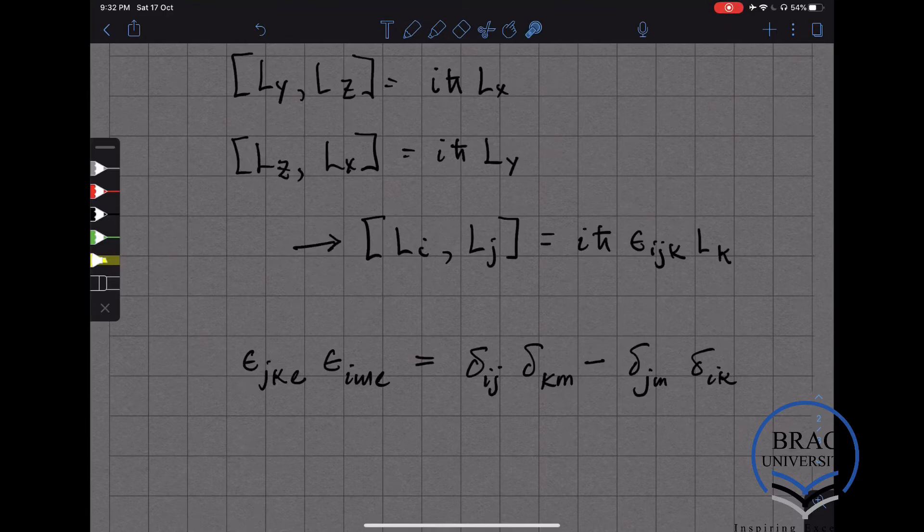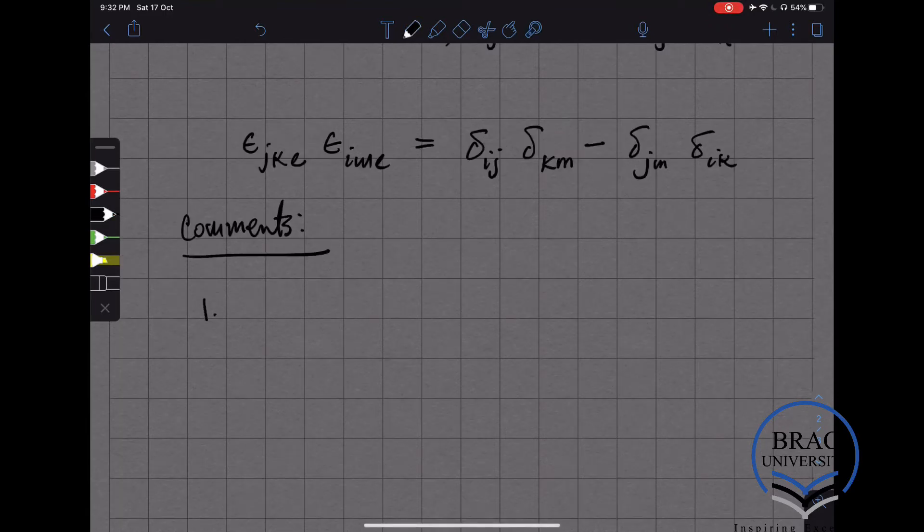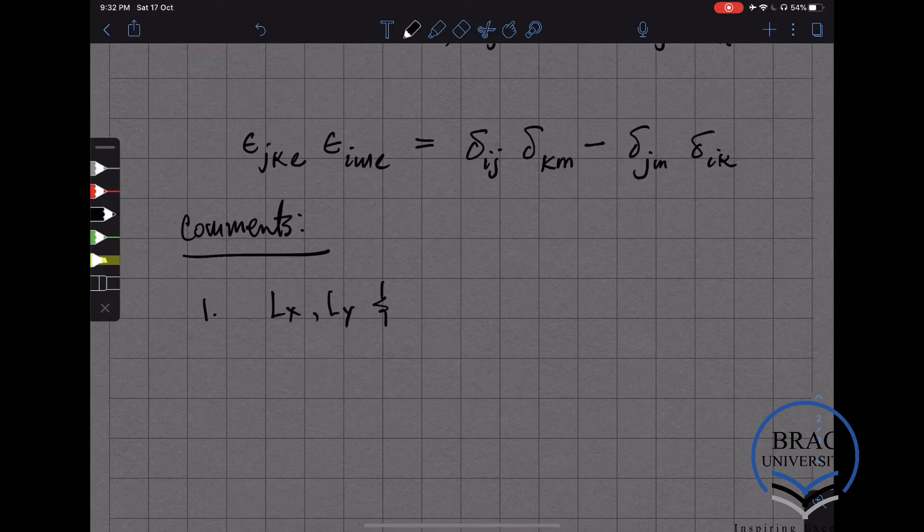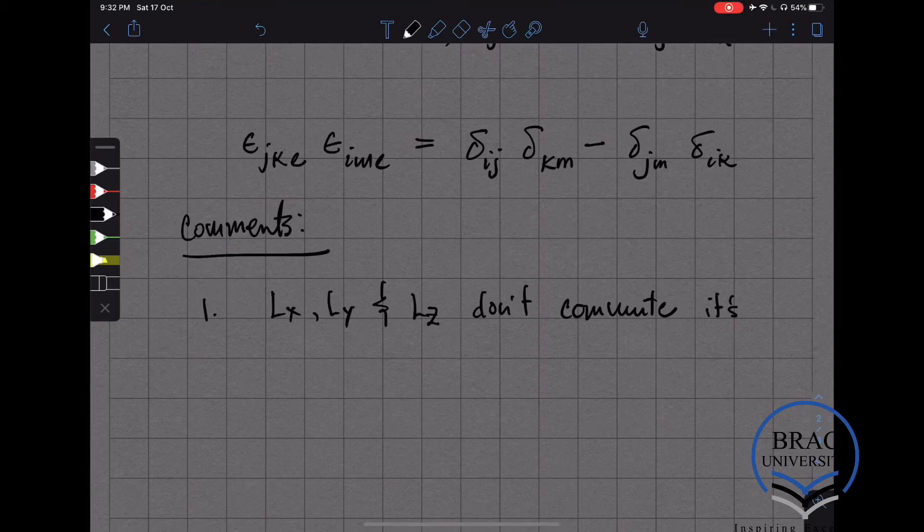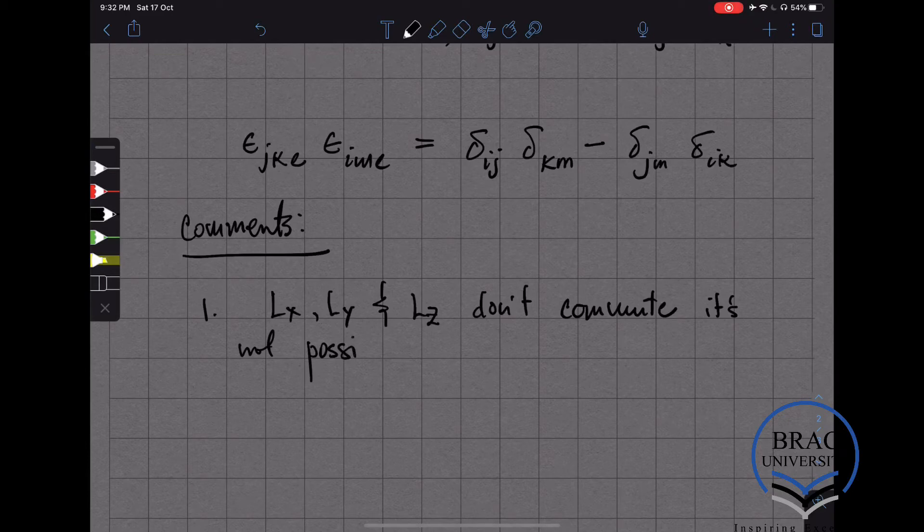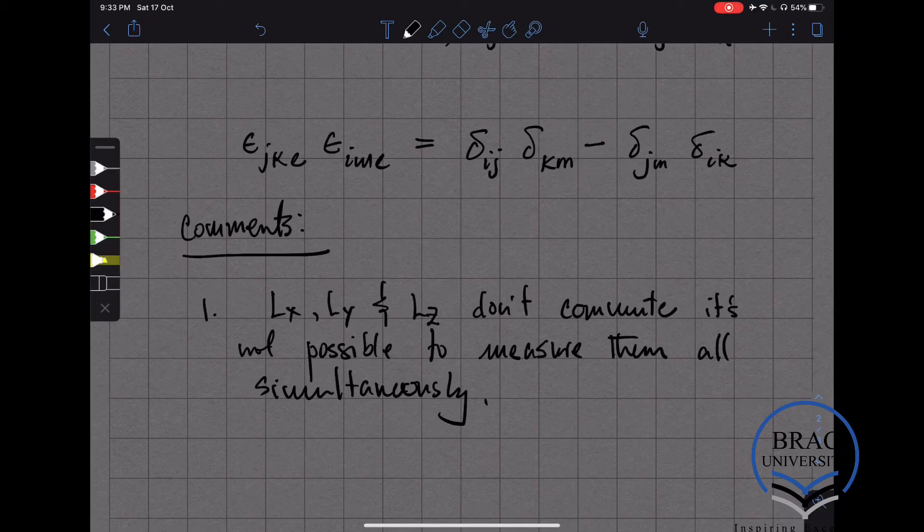Let's make a few comments. Comment number one is that since Lx and Ly and Lz don't commute, it's not possible to measure all of them simultaneously.